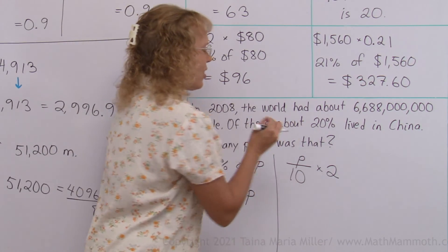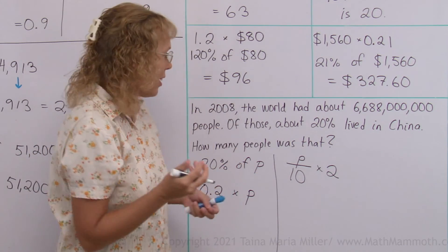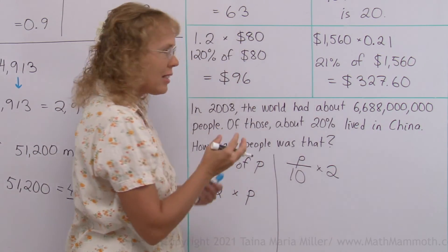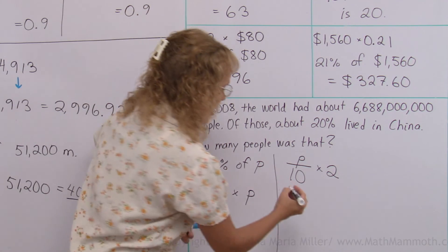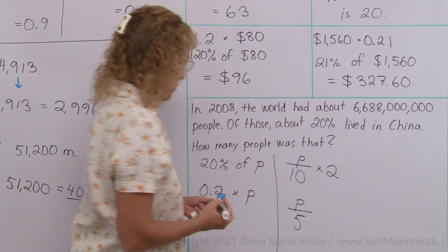20% is a certain easy fraction. It is one-fifth. And to find one-fifth of this number means dividing it by 5. So yet one more way is to take the number and divide it by 5.